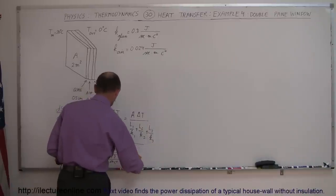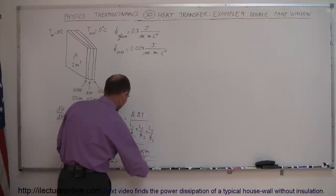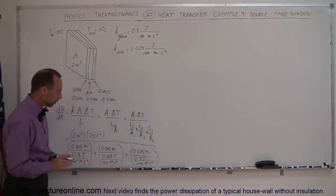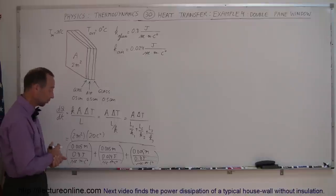We still have our third layer, so we have plus, and that will be 0.005 meters divided by 0.8 joules per second times meters times centigrade degrees. It gets a little messy with all the units. Typically I would like to leave the units off, but just to make sure that when you simplify all the units, you'll end up with joules per second, or watts.